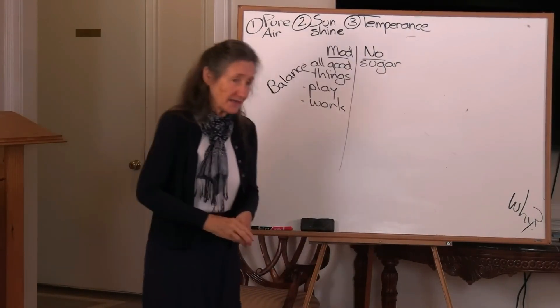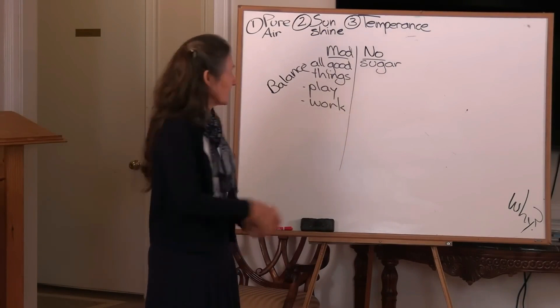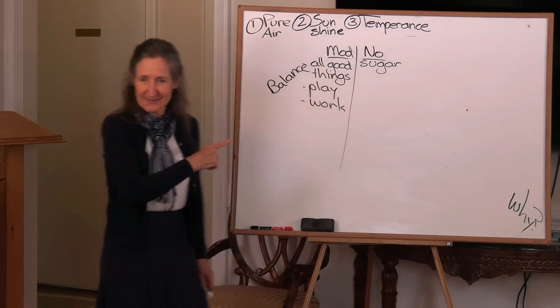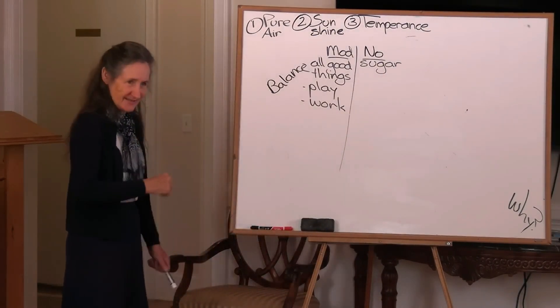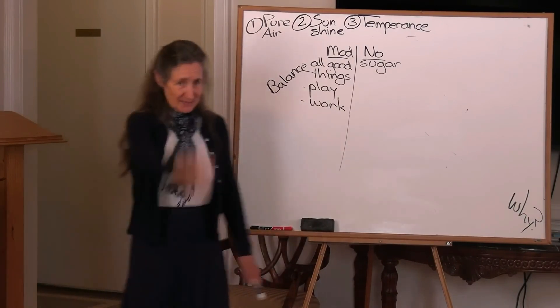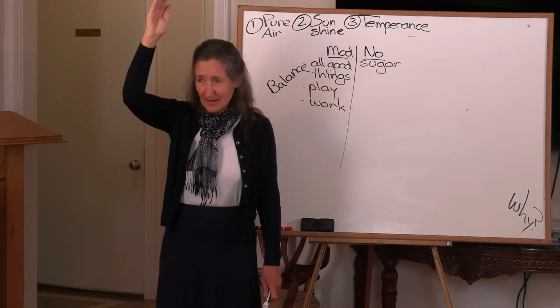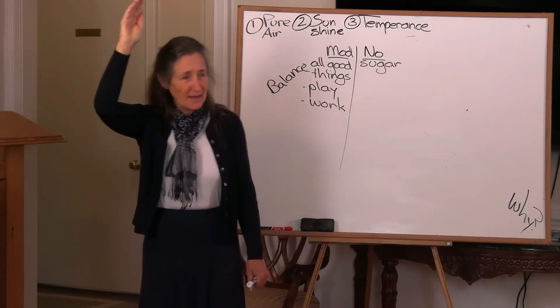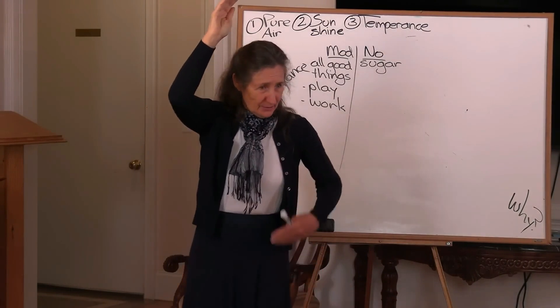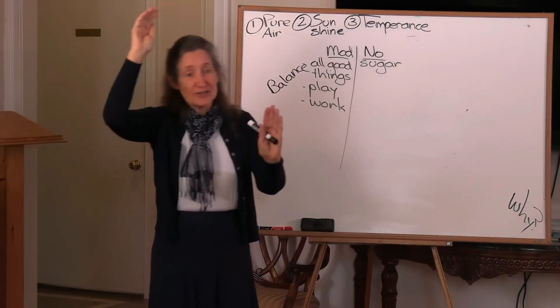In his book Pure White and Deadly, Dr. Yatkin claims it should be banned—it is so dangerous. How is it dangerous? It gets the blood sugar level up very high, very fast, and then the body to cope with this sends a huge amount of insulin to get it out of the blood and into the cell.